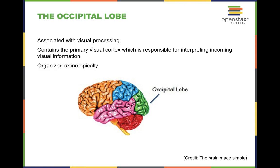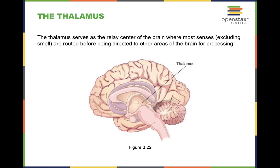When it comes to the occipital lobe, this is at the very back of your brain. The occipital lobe is hugely crucial for vision. Although our eyes are at the very front of our face underneath the frontal lobe, the overall final processing is done at the very back with the occipital lobe. Information in the left visual field goes to the right hemisphere; information in the right visual field goes to the left hemisphere.